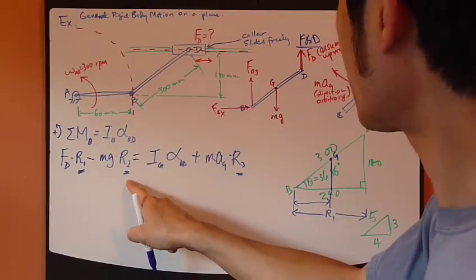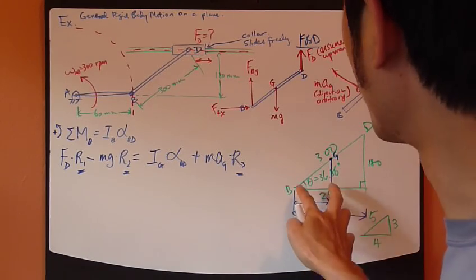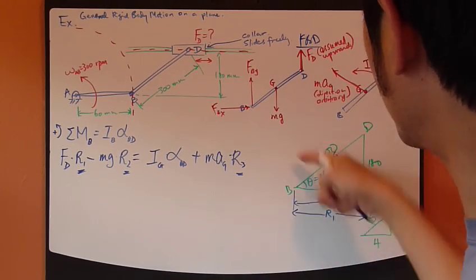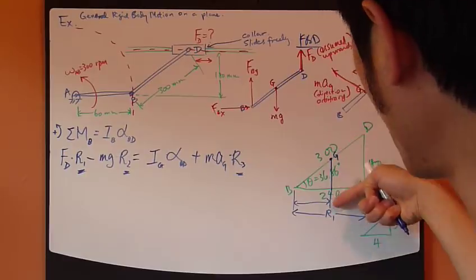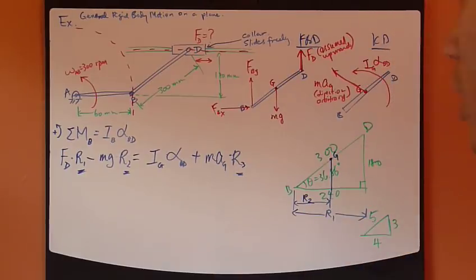R2 is the moment arm for the weight, which is coming straight down. So, this line is 4. So, this is R2, which is half of R1.